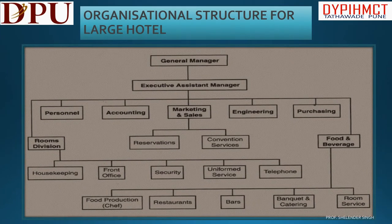In this slide we will talk about various departments and their sub-departments. The first and highest designation in the hotel is General Manager, to whom all department heads report. After that there is Executive Assistant Manager or Hotel Manager. Then Food and Beverage, Room Division, and Personnel, also called Human Resource.